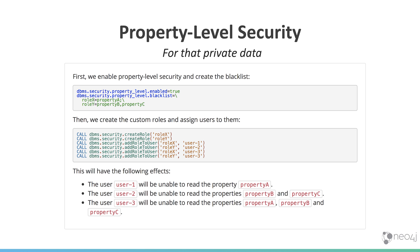We've also added a new security feature in this release. This feature focuses on property-level security for keeping private data private. Property-level security allows you to blacklist certain properties so that users with particular roles are unable to access those properties. Users in role X are unable to read property A, and users with role Y are unable to read properties B and C.